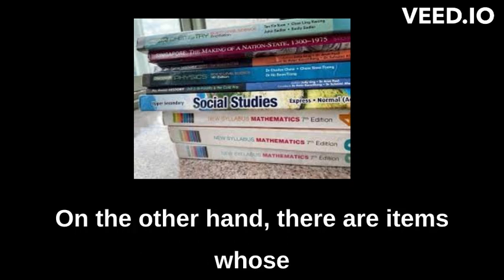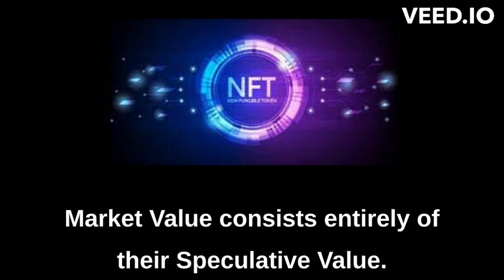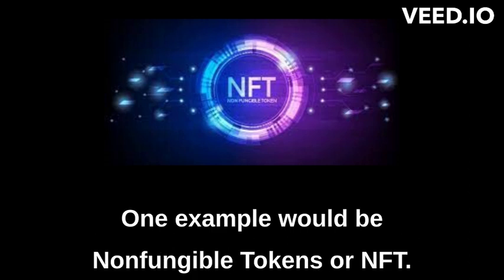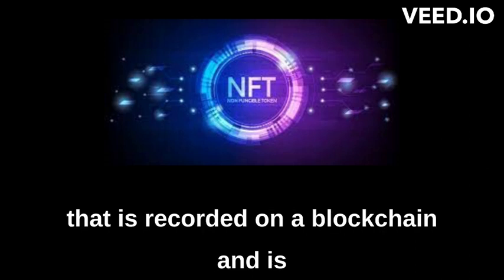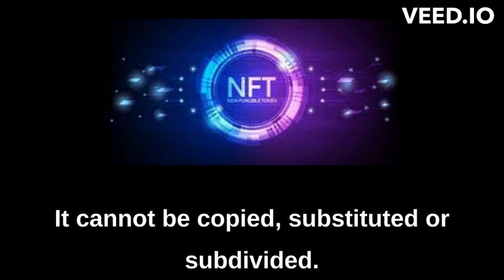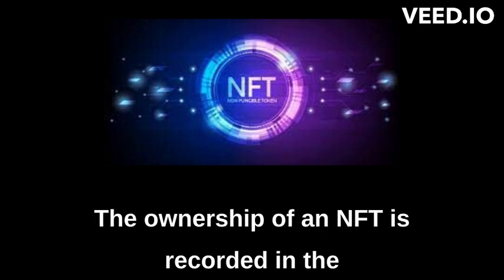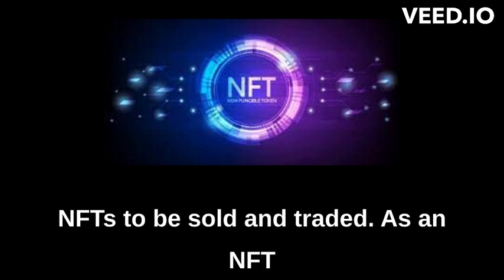On the other hand, there are items whose market value consists entirely of their speculative value. One example would be non-fungible tokens, or NFTs. Essentially, an NFT is a unique digital identifier that is recorded on a blockchain and is used to certify ownership and authenticity. It cannot be copied, substituted, or subdivided. The ownership of an NFT is recorded in the blockchain and can be transferred by the owner, allowing NFTs to be sold and traded.